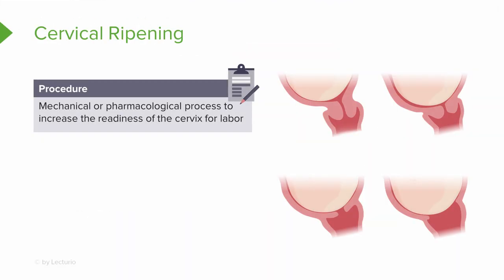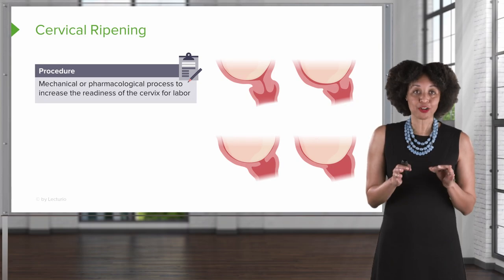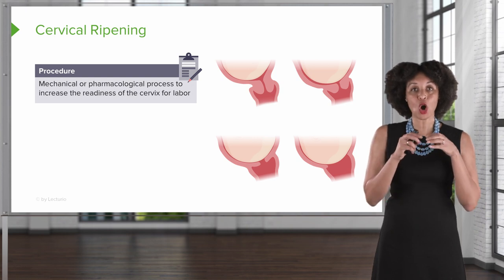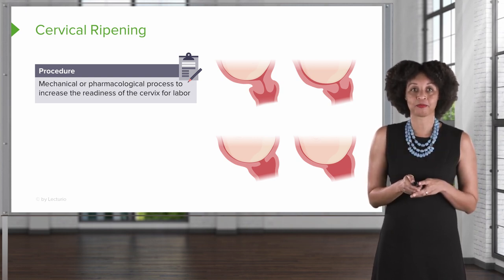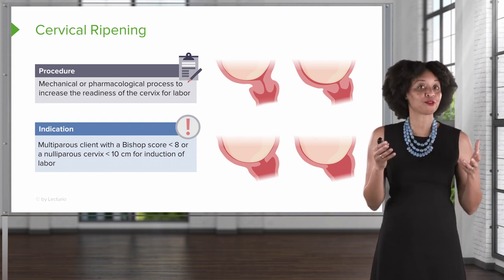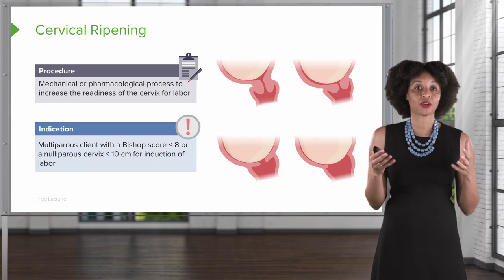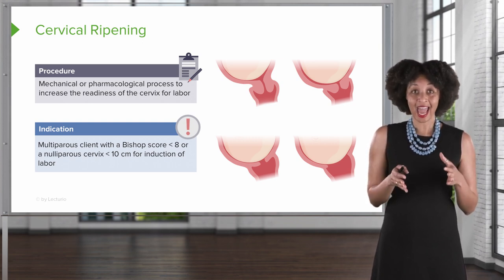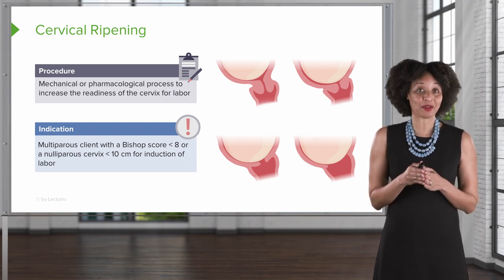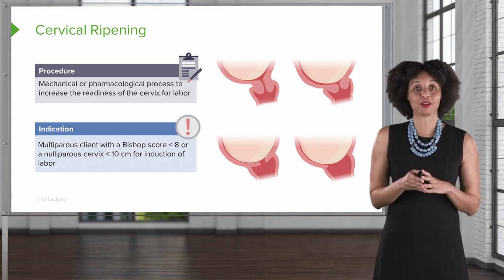The next procedure is cervical ripening. Cervical ripening is done for a client who may be induced for their birth. It is a mechanical or pharmacological process to actually open and help soften the cervix and get it ready for labor. If a client has had a baby before, we use a test called a Bishop score, and if that score is less than eight, we will need to consider cervical ripening. If the client has never delivered before, that Bishop score threshold is less than ten.